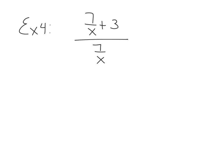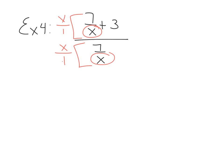Example 4 is on page 158: 7/X plus 3, all over 7/X. Looking for the common denominator — both denominators are X, so the common denominator is X. We'll multiply top and bottom by X over 1, using the over-1 form because there are fractions involved.